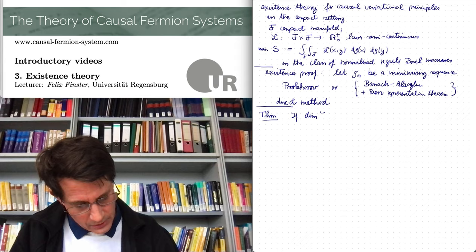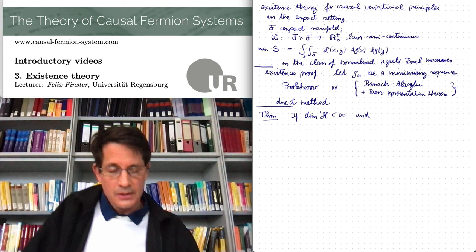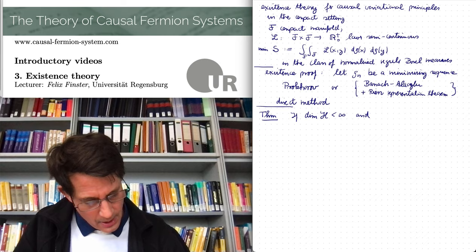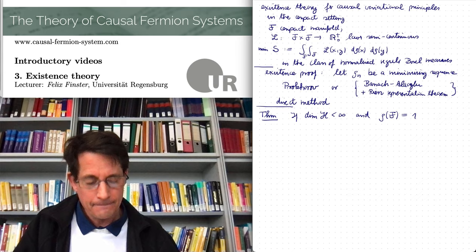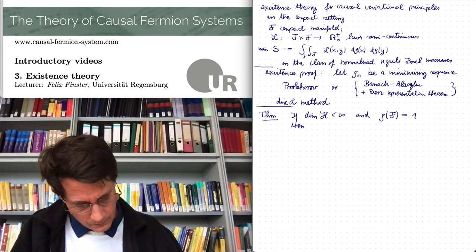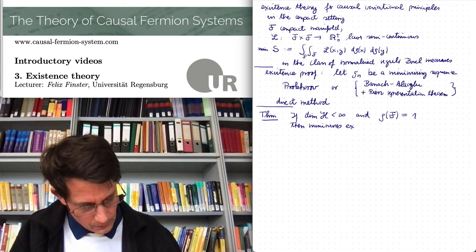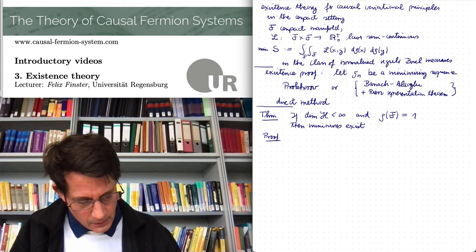If the dimension of H is finite. And then the correct setting is to consider normalized measures of total finite volume. And rho of F is equal to 1. Then there are minimizers. And the method is again the direct method.